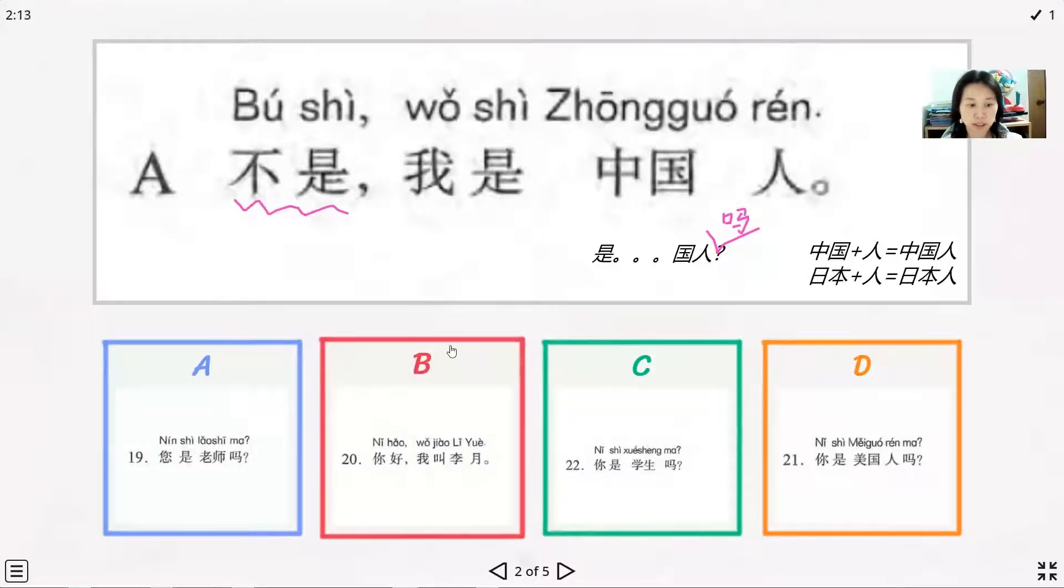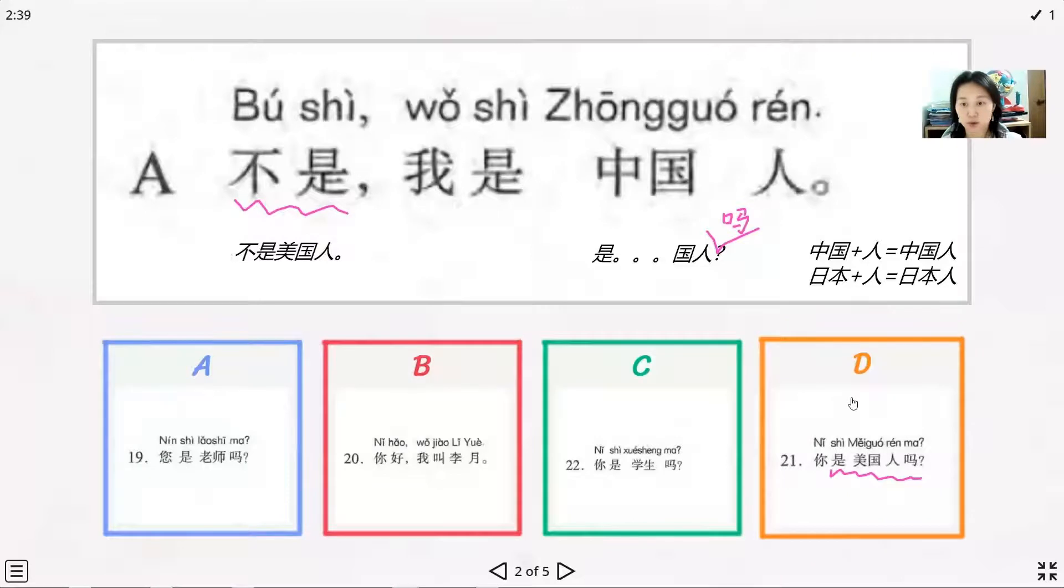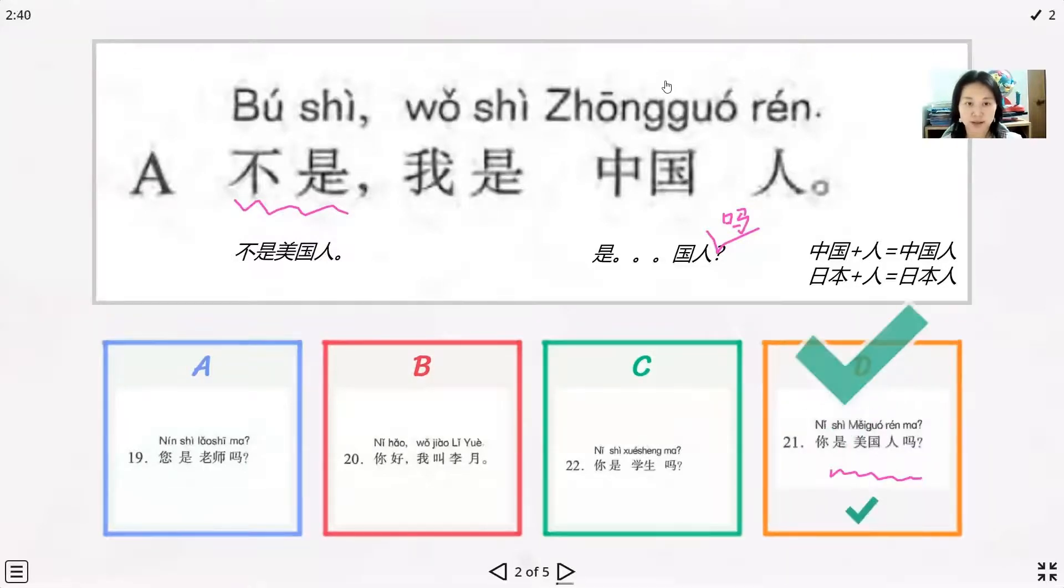We just find and this one D, we can find shi meiguoren ma. And the answer is bu shi, that means bu shi meiguoren, I'm not American. And just explain why we say no, and the reason is wo shi zhongguoren, I'm Chinese. So this one we just choose the D is the correct answer.